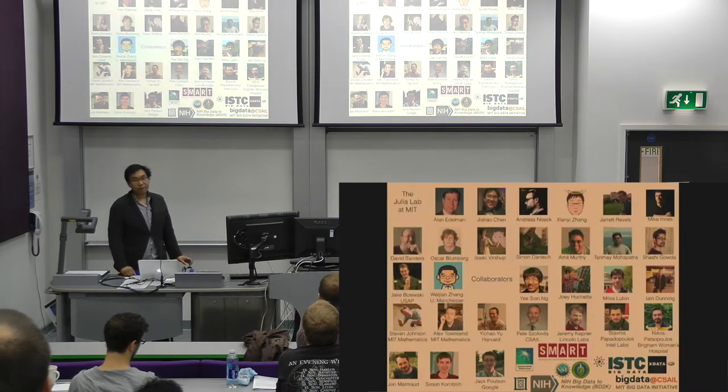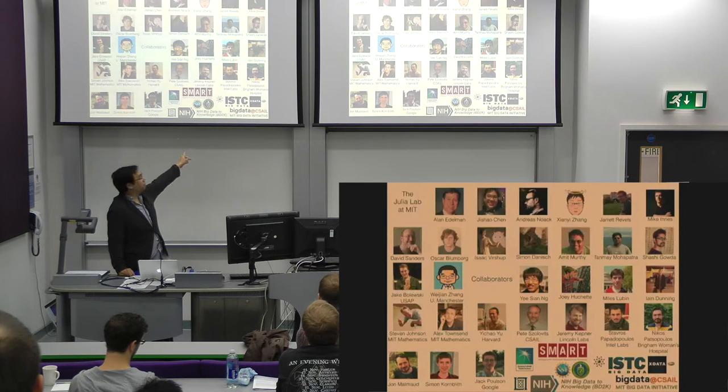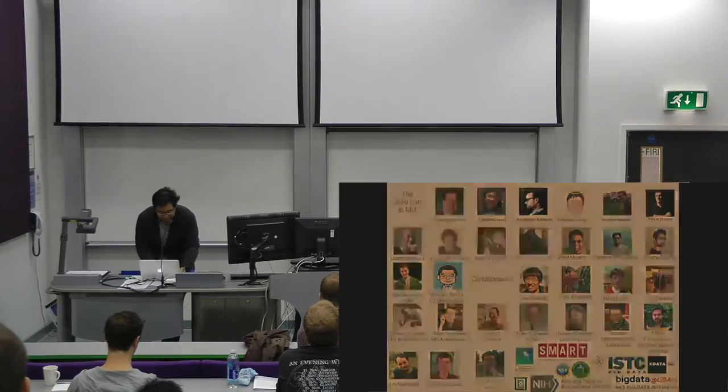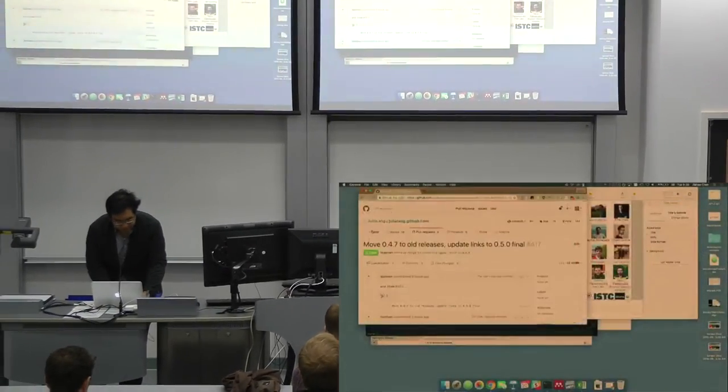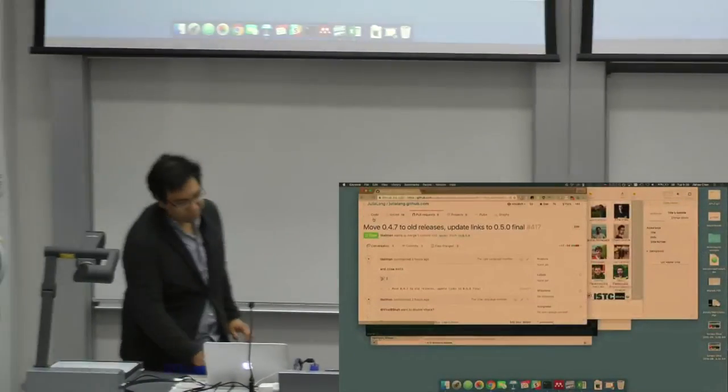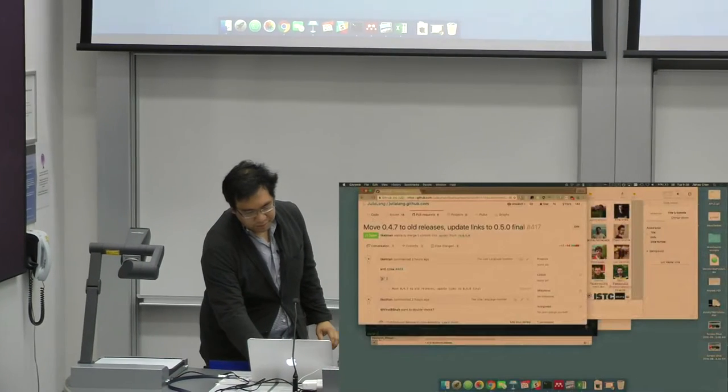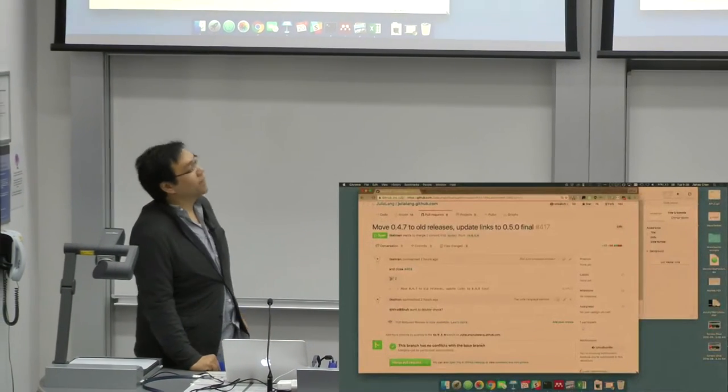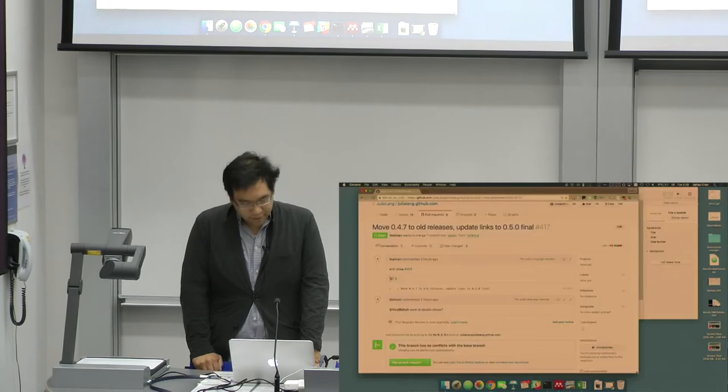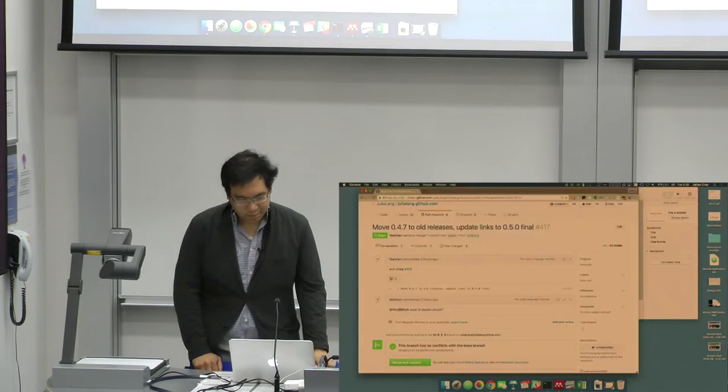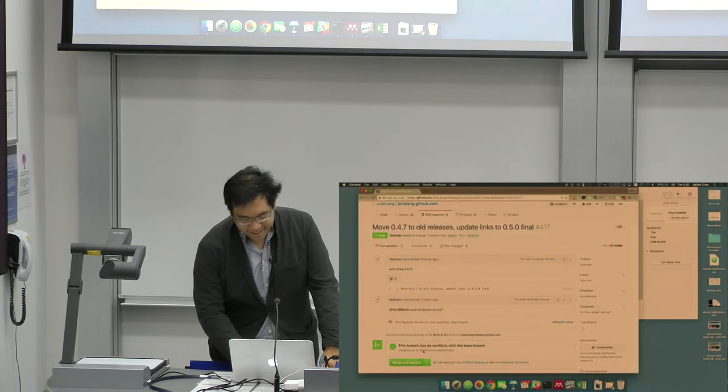If you want to know how to create a new programming language, step one is convince other people to pay for it. I thought I'd also point out that this happened today. In the last 24 hours, Julia 0.5 was just tagged, and we might be releasing binaries today, assuming this gets merged.